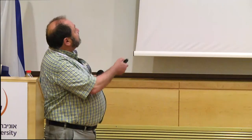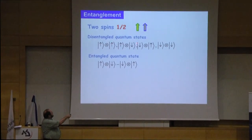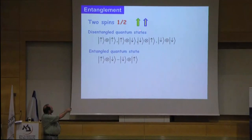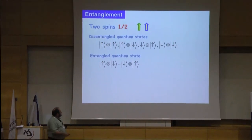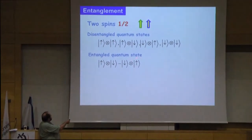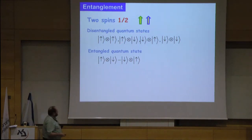The first definition you hear is: if you have two spins, there are states which are the direct product of a certain state of one spin and a certain state of another spin. These states are not entangled, and if you cannot present your state in this form, then it is entangled.